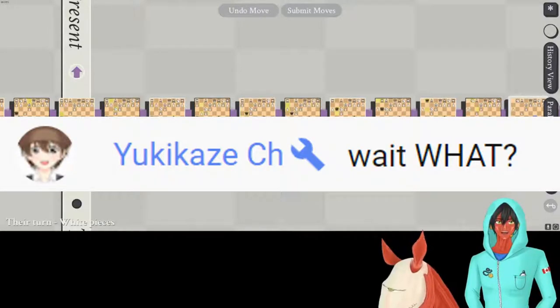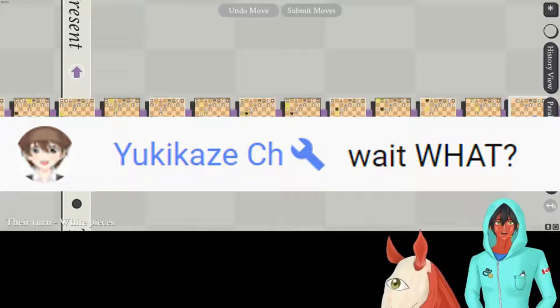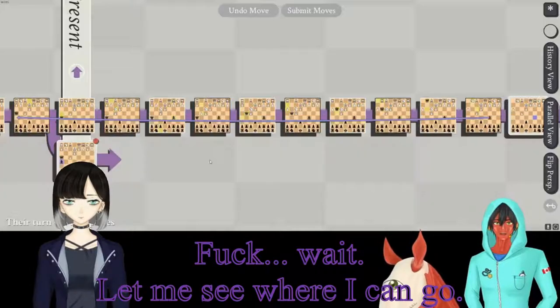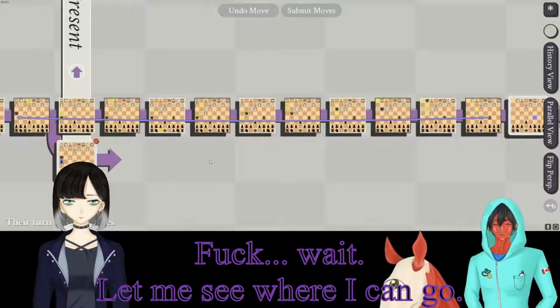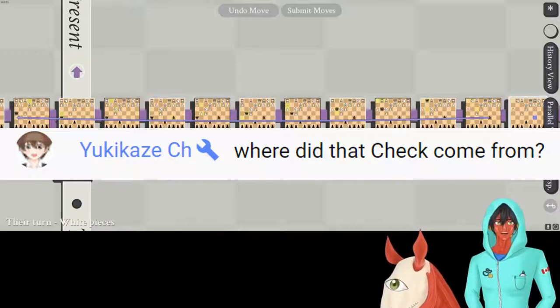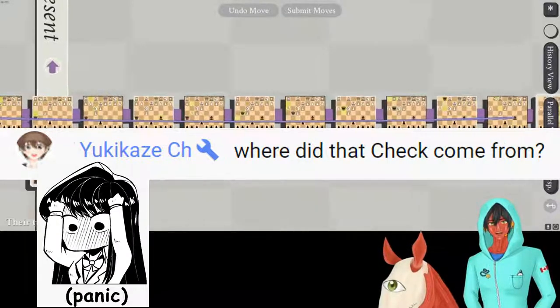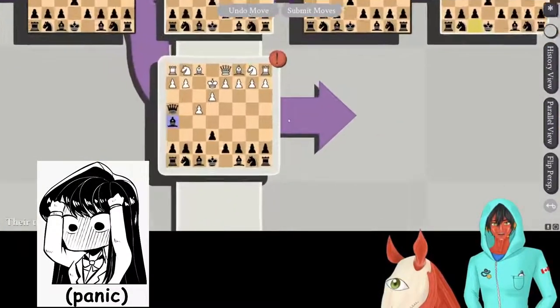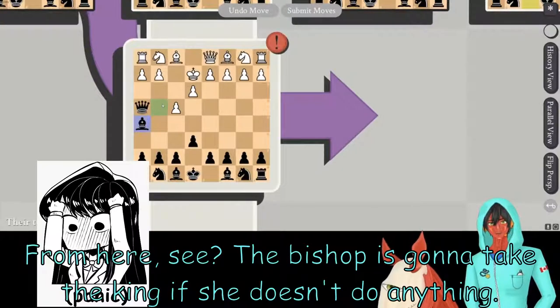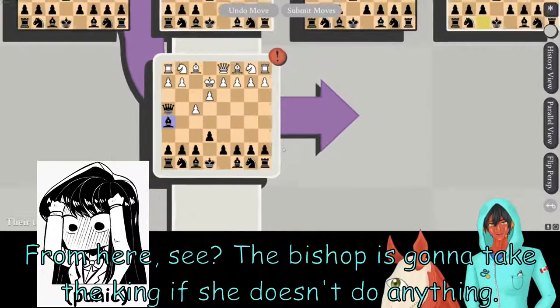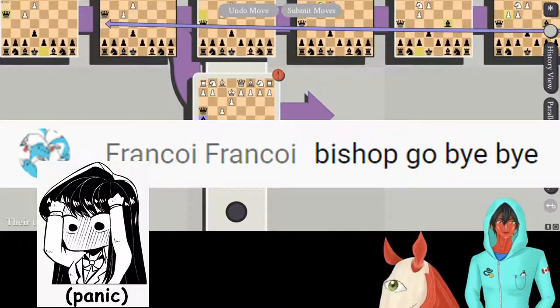Wait, what? Yuki, we're playing 5D chess. Fuck. Wait, let me see where I can go. Where did that check come from? Nowhere! I have nowhere to go. From here, see, the bishop's gonna take the king if she doesn't do anything. Bishop go bye-bye.